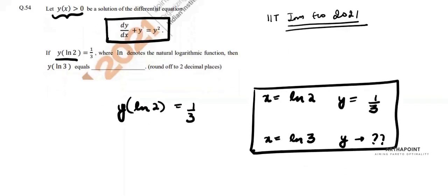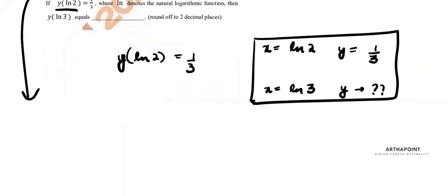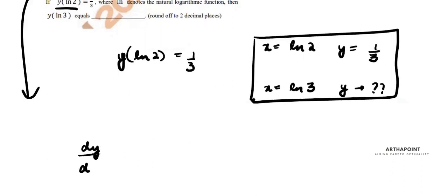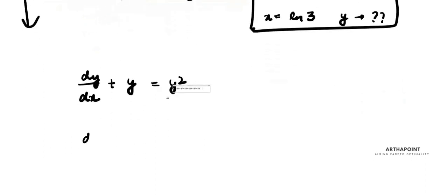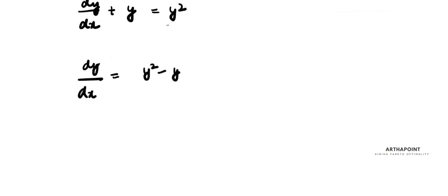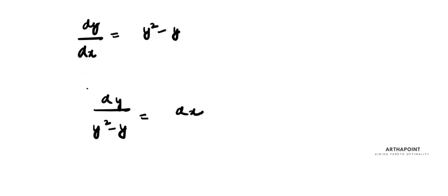You just have to integrate the function — this differential equation means integration only. The equation given is dy/dx + y = y². So we get dy/dx = y² - y. Bringing all y terms to one side and all x terms to the other side: dy/(y² - y) = dx.